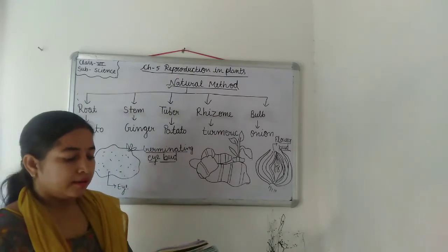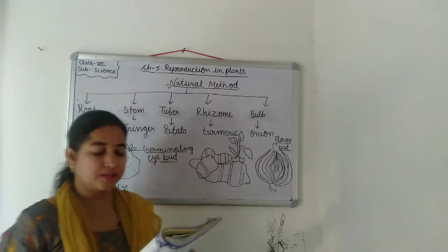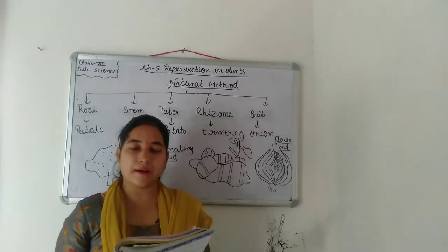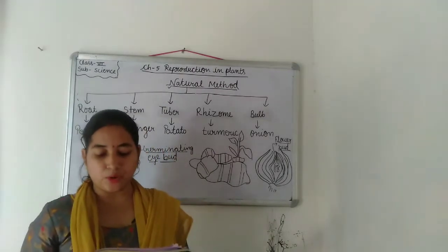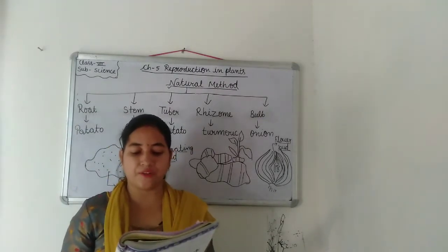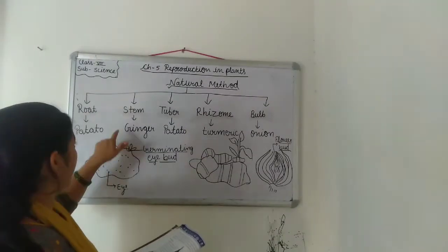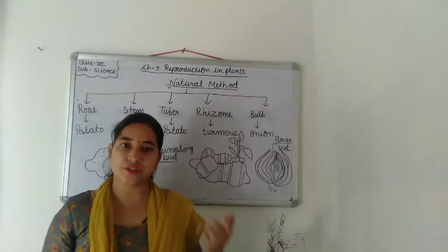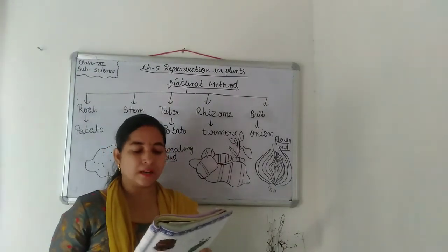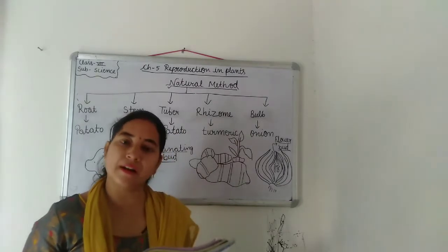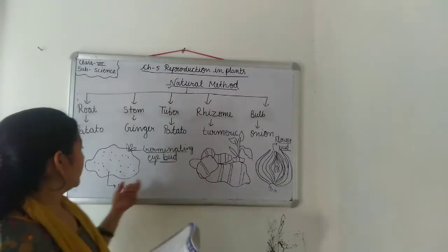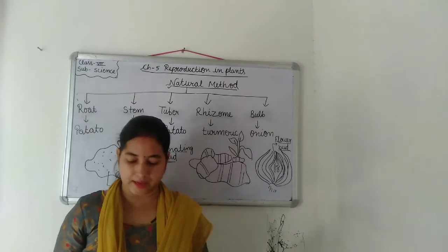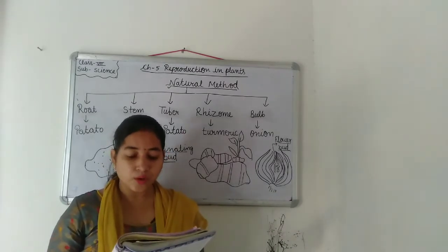Next is stem. Plants like potato, ginger, and onion can be obtained from their modified underground stem. Potato is a modified underground stem. These underground stems produce several new plants from their buds. Yeh jo underground stem hote hain, apne buds se bahut sare paudho ko utpann karte hain.